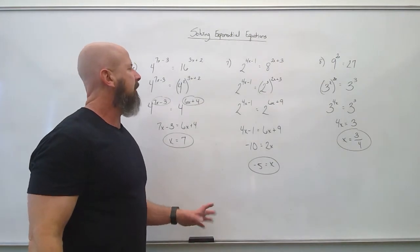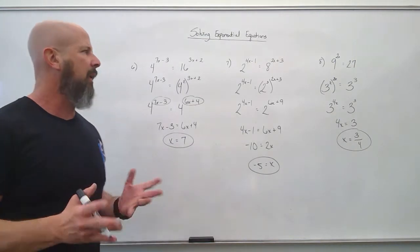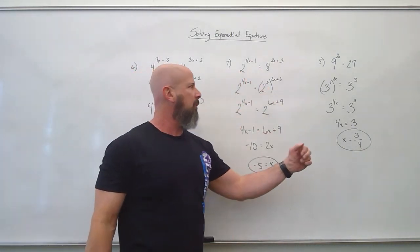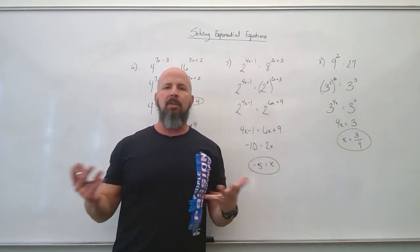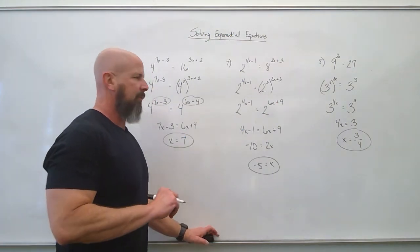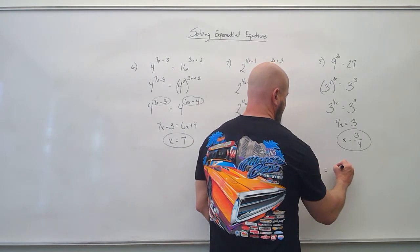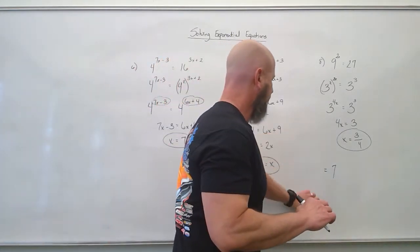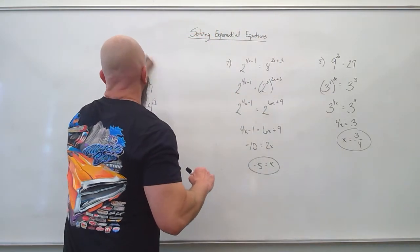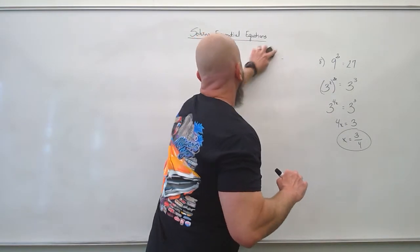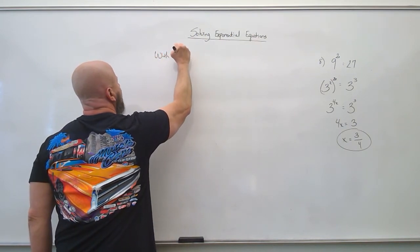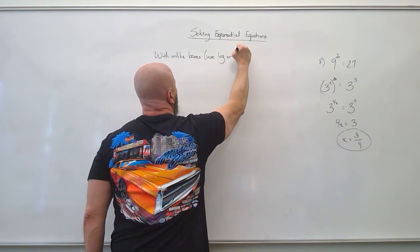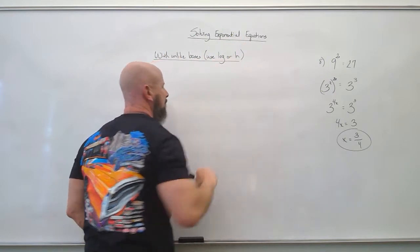Now let's look at how to work with unlike bases — ones that you can't make like. For example, I can make 8 in terms of 2, and 9 and 27 in terms of 3, but there are some numbers I cannot make like. When you have unlike bases, use log or natural log — either one works fine.